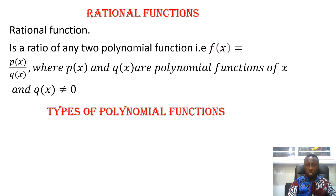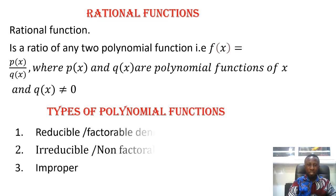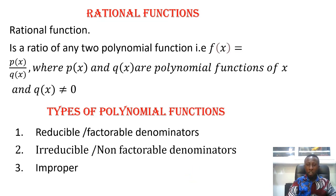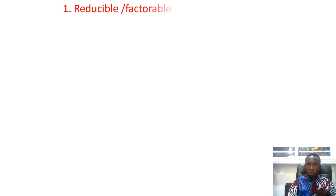Types of rational functions: we have reducible or factorable denominators, irreducible or non-factorable denominators, and improper. We'll take them one after the other. With our first type — reducible or factorable denominators — we have some sub-types.